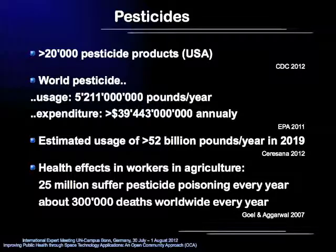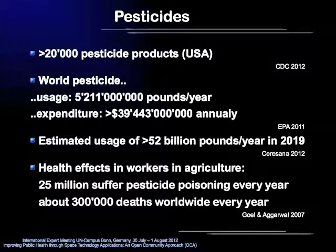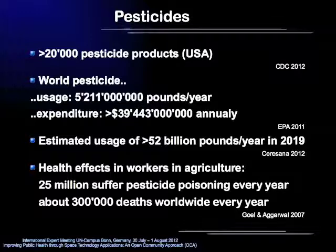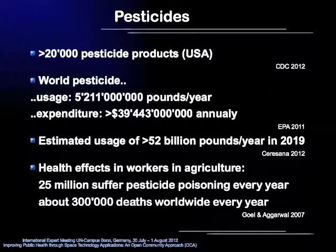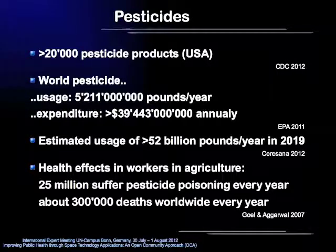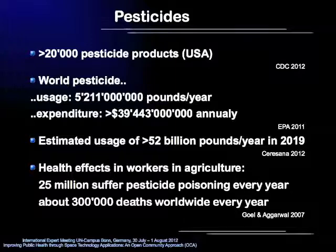In the USA there are today more than 20,000 different registered pesticide products. It is estimated that in the whole world over 5.2 billion pounds of pesticides are used every year, resulting in expenditures of almost 40 billion US dollars annually. This is more than the gross domestic product of many African and Central American countries. It is expected that the usage of pesticides will increase tenfold by 2019 to over 52 billion pounds per year. Regarding public health, it is estimated that roughly 25 million people suffer from pesticide poisoning every year, of which about 300,000 die every year, primarily in developing countries.